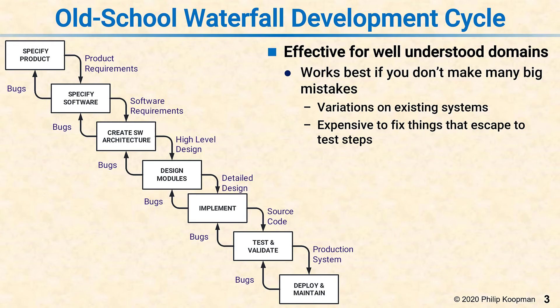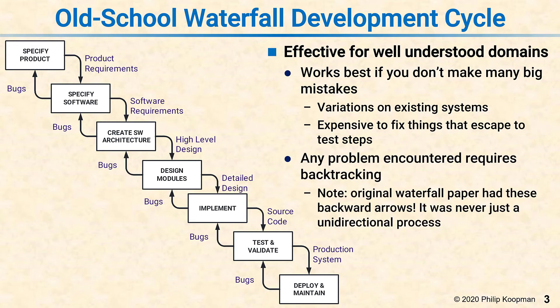So for example, if you make a big mistake in the product requirements and don't find out about it until you're testing and validating, you have to go all the way back up the waterfall and back down it again to make the change.